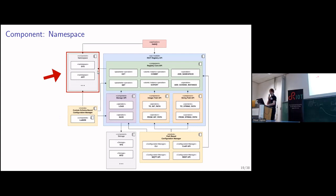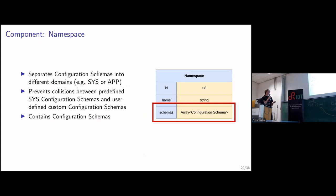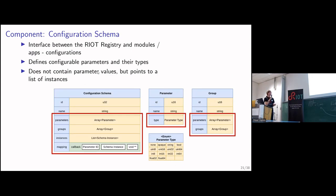Expanding on the namespace: basically it's a separation between the system and the app namespace, to prevent naming collisions in the future. It just contains an array of schemas and has an ID and a name. So what is a configuration schema? It holds the information of what configuration parameters are available. It has an array of parameters, and each parameter has a name and an ID so you can also identify them via integer path. We also have groups, which provide a tree structure for how you organize your configuration.